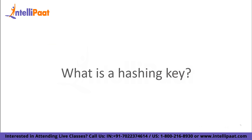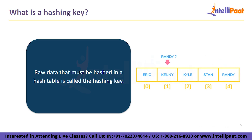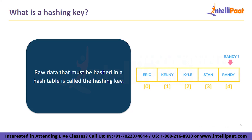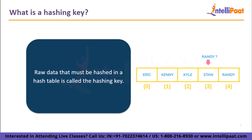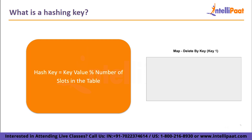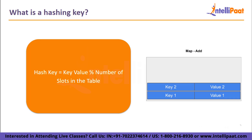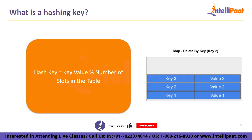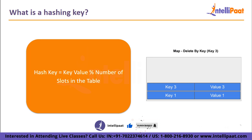Now we move on to what a hashing key is. The raw data that must be hashed in a hash table is called the hashing key. The function that converts the hash key into the hash value is carried out by the hashing algorithm. The hash value is the result of running the hash key through the hashing algorithm. It is given by: hash key = p-value mod number of slots in the hash table.